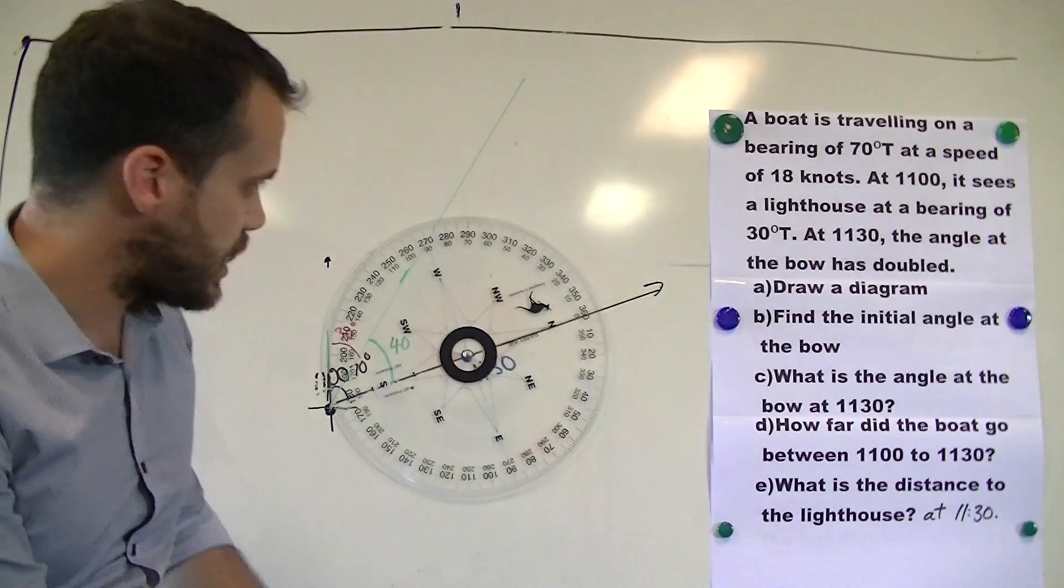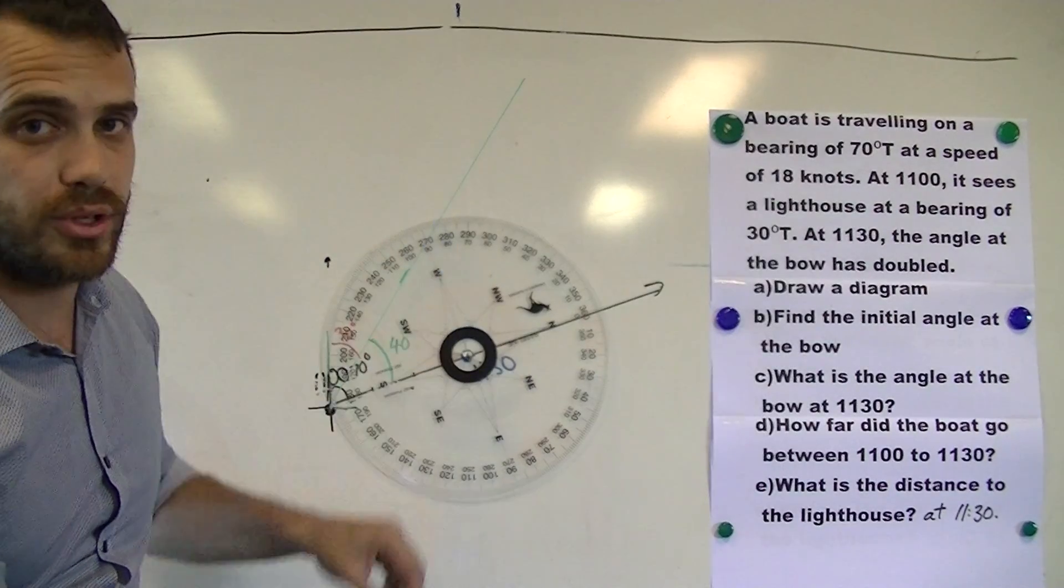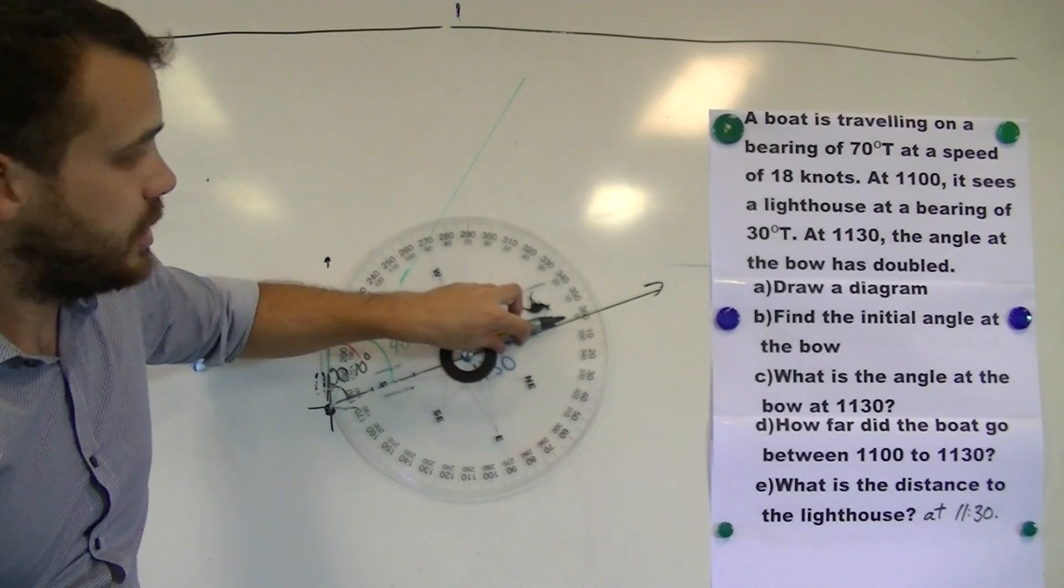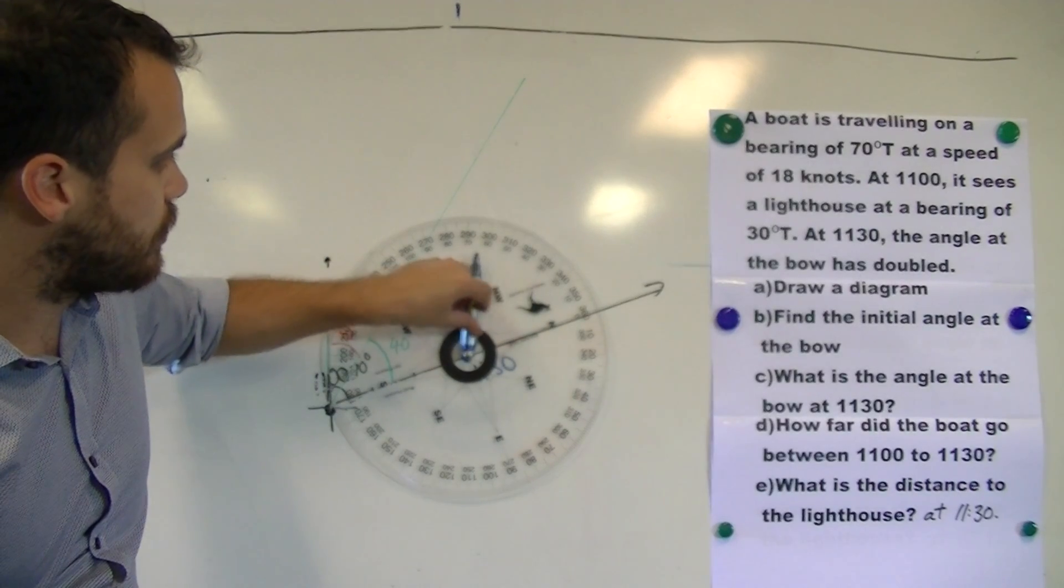Now this time we take our bearing not from the north line, but we take our bearing from where we were going, because that's the bow, and we go 80 degrees from the bow.